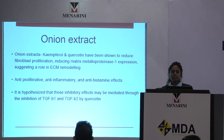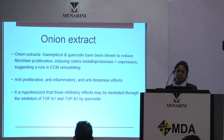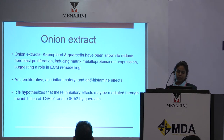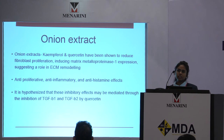Onion extracts like kaempferol and quercetin have shown to reduce fibroblast proliferation and also induce matrix metalloproteinase-1. They have anti-proliferative and anti-inflammatory effects, and are seen in the commonly used drug Mederma.